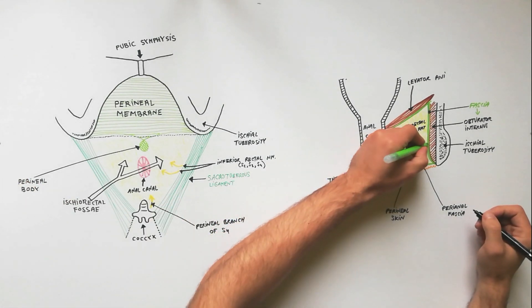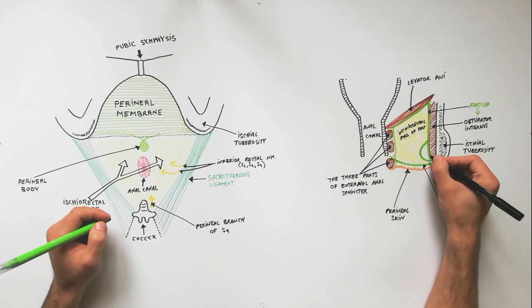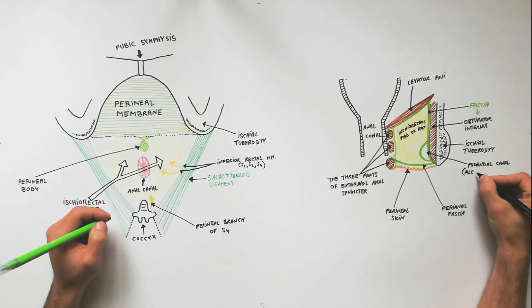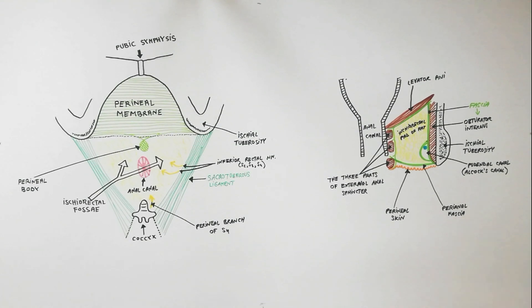The pudendal canal, also called the Alcock canal, is a fascial canal present in the lateral wall of the ischiorectal fossae. The pudendal canal is formed by the splitting of the obturator internus fascia. It contains the internal pudendal vein and artery and the pudendal nerve.